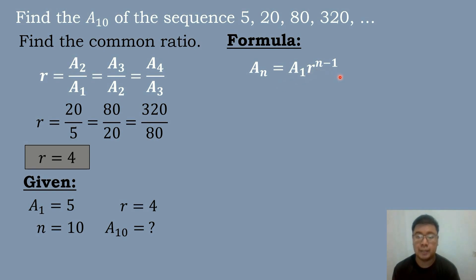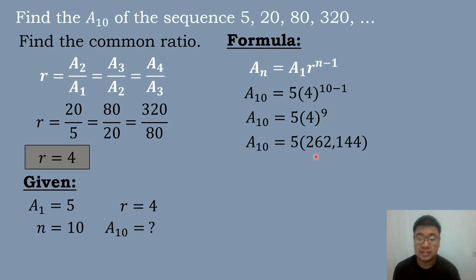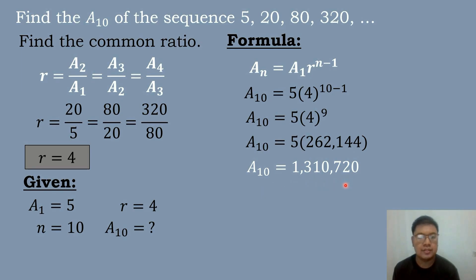We use the formula a sub n equals a sub 1 times r raised to n minus 1. Substituting: a sub 10 equals 5 times 4 raised to 10 minus 1, which is 9. So a sub 10 equals 5 times 4 to the 9th power. 4 to the 9th power is 262,144, and 5 times 262,144 equals 1,310,720. So the 10th term of the geometric sequence 5, 20, 80, 320 is 1,310,720.